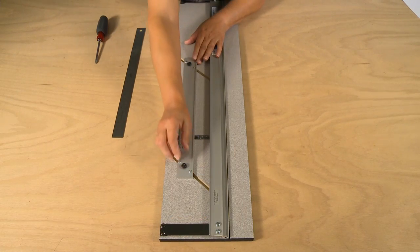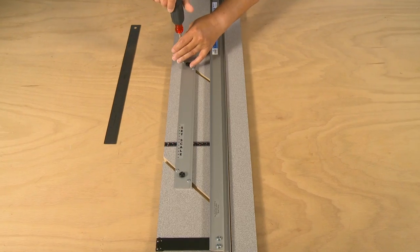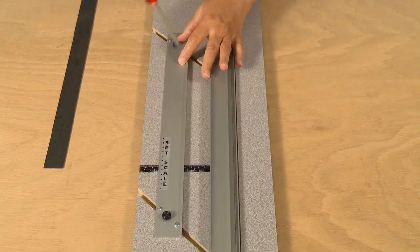To re-parallel the mat guide, first loosen the black knobs with your fingers. Then using a Phillips screwdriver, loosen the four Phillips screw heads on either side of the black knobs.